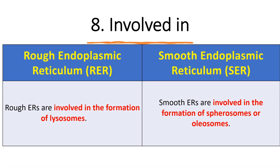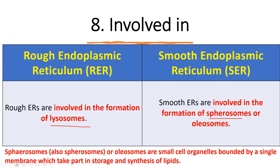Regarding their involvement and functions: rough endoplasmic reticulum is involved in the formation of lysosomes, whereas smooth endoplasmic reticulum is involved in the formation of spherosomes and oleosomes. Spherosomes or oleosomes are small cell organelles bounded by a single membrane that take part in the storage and synthesis of lipids. Rough ER is involved in the formation of lysosomes.